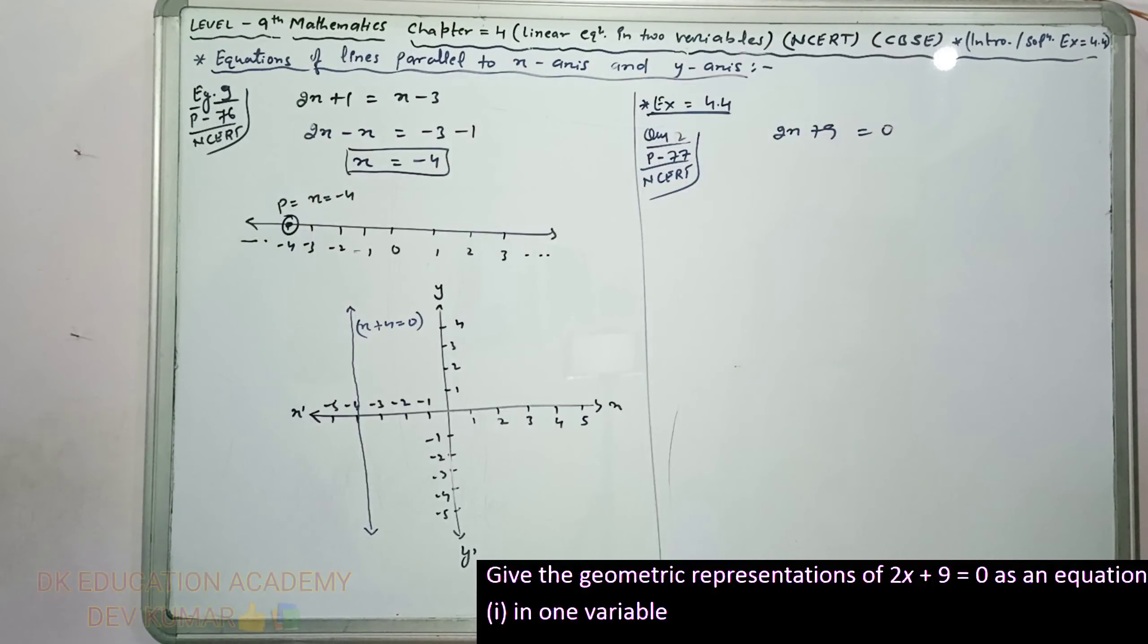If you do the number line, that's it. Now if you have it on the Cartesian plane with two variables, then X-axis - 1, 2, 3, 4, 5. The point is around 4.5. So straight line parallel to Y-axis passing through x equals minus 4.5. You can understand because it was very easy.